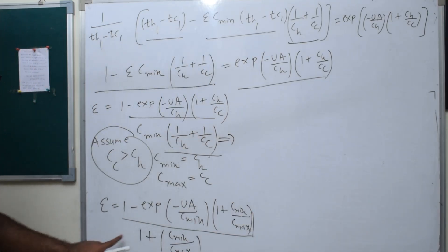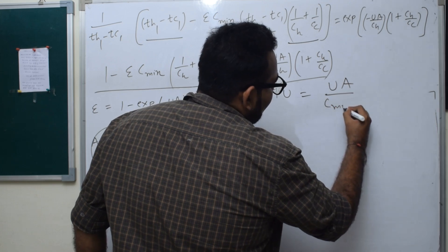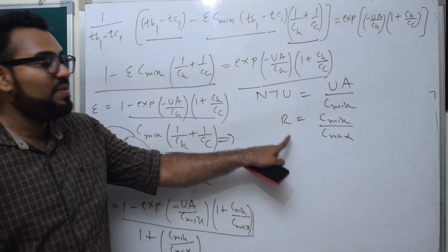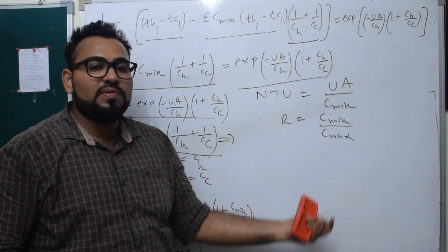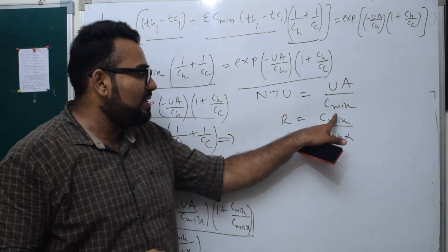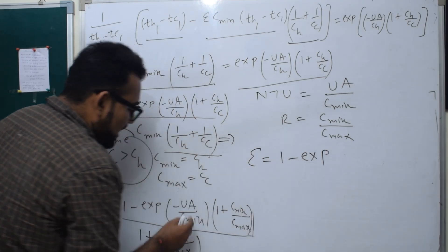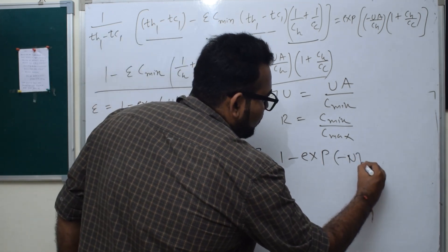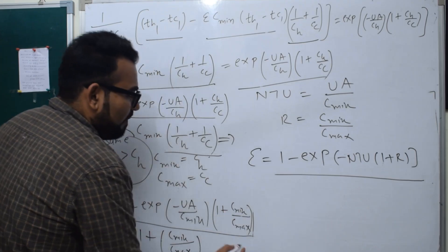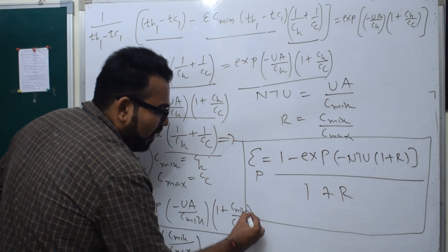We identify U·A divided by C_min as NTU — the Number of Transfer Units. And C_min divided by C_max is the heat capacity ratio Cr. So the effectiveness epsilon for a parallel flow heat exchanger can be expressed in terms of NTU and Cr. This gives us the NTU-effectiveness relation for the parallel flow heat exchanger.